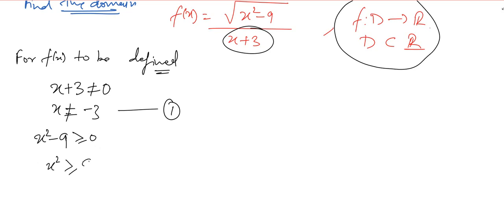x squared has to be greater than or equal to 9. From this we can conclude that x has to be smaller than or equal to minus 3 and greater than or equal to 3. This is condition number 2.